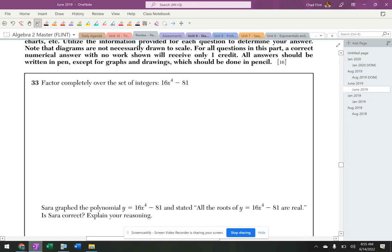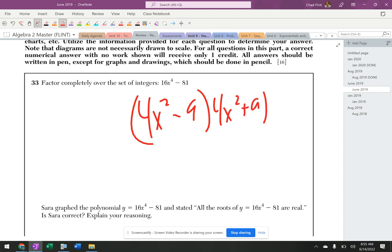It says factor this. This is difference of two perfect squares: 4x² - 9 and 4x² + 9. Then this is 2x + 3, the other difference of two perfect squares, and 2x - 3 times 4x² + 9.